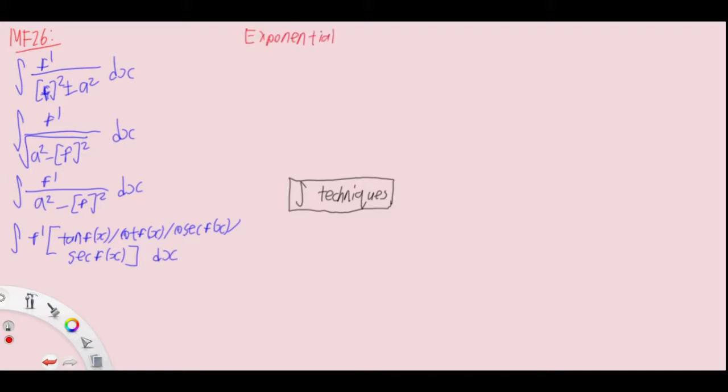Under exponentials, we have the generic formula: f'(x) times e^f(x) gives e^f(x) plus c. For logarithm, f' over f gives ln|f(x)| plus c.